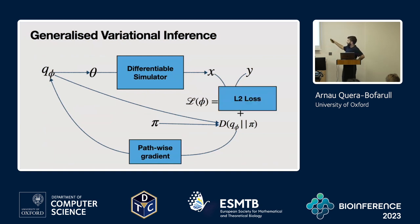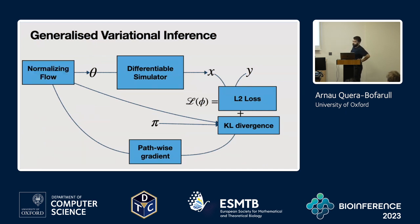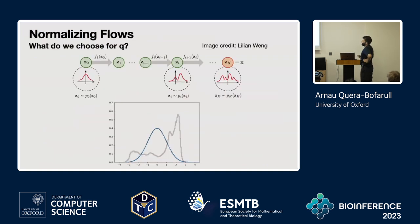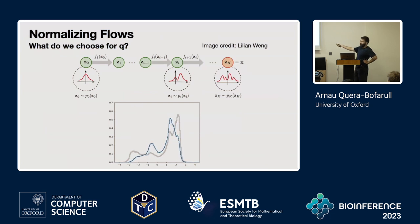As the loss I choose the L2 loss, comparing simulated cases with ground truth data. As the divergence I use the standard KL divergence. For the family of distributions I choose a normalizing flow — a way to describe a general distribution via a series of transformations that convert a simple standard distribution into a more complex one, where the transformations are easy to invert and the determinant is easy to compute.